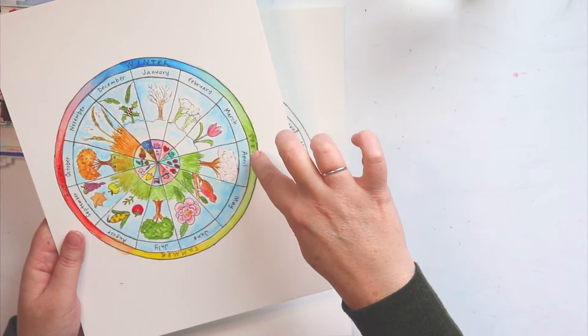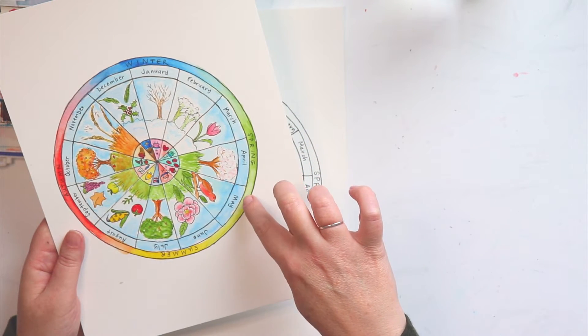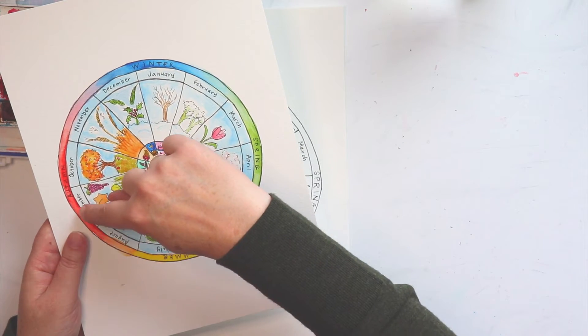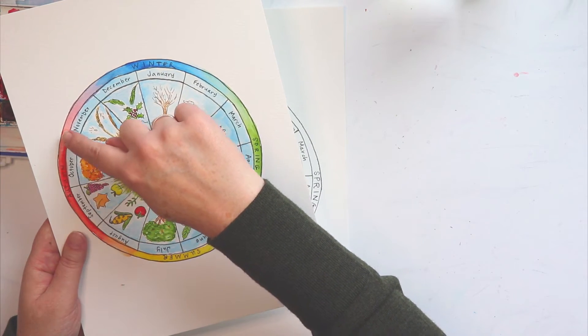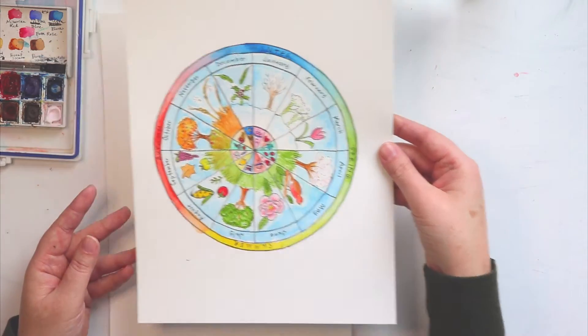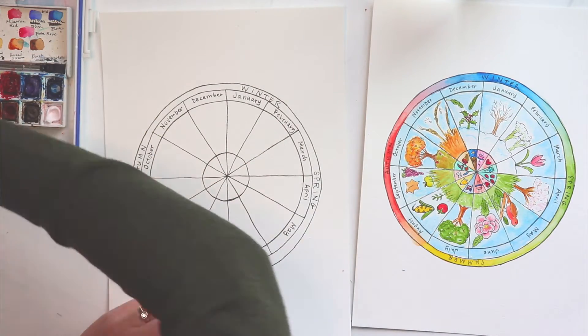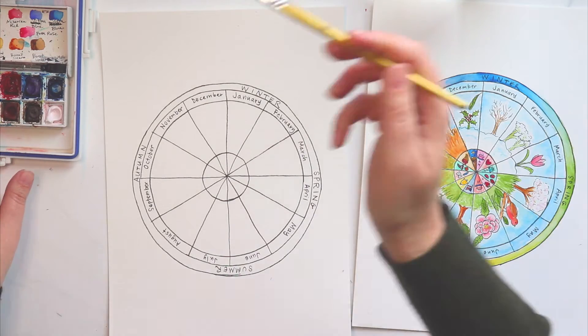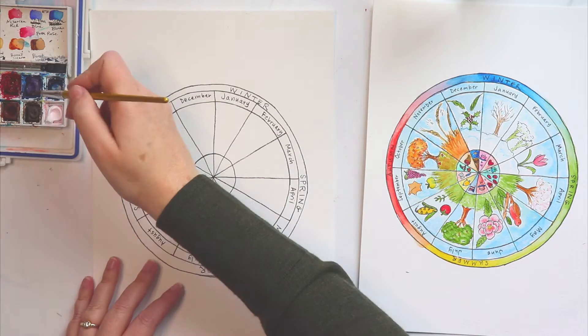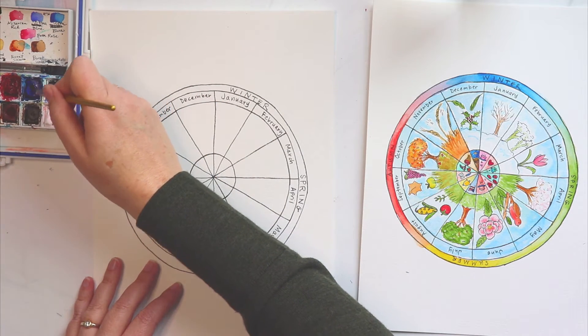And then it kind of graduates into a nice spring green and green kind of graduates into yellow for summer. And then yellow graduates into orange and a deep red into autumn, and then kind of a purple color into winter. So those are the colors I chose to do. I'm just going to show you how to do that with your watercolors. So I'm going to start with winter just right here, and I'm going to use my intense blue.